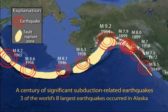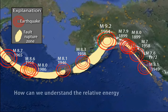Red circles mark the epicenter above the site where the fault rupture began, whereas yellow shows the fault rupture area.